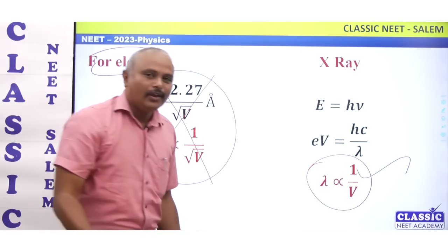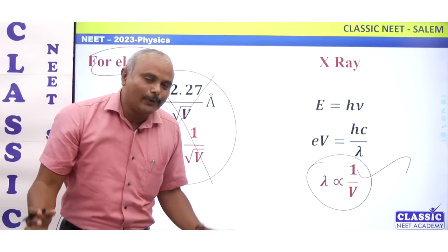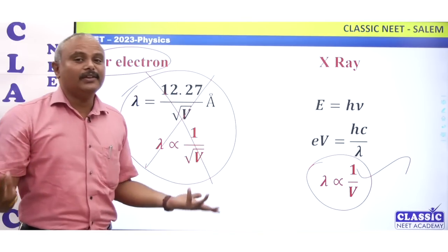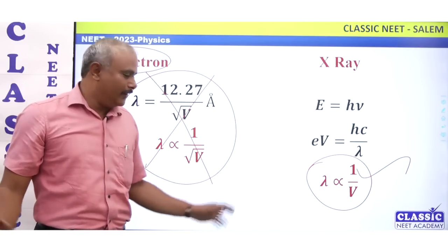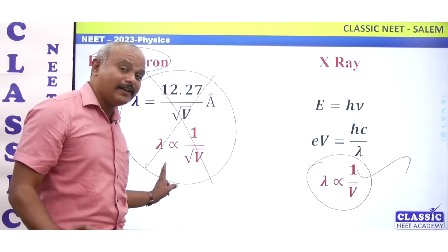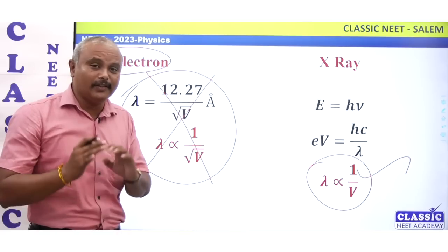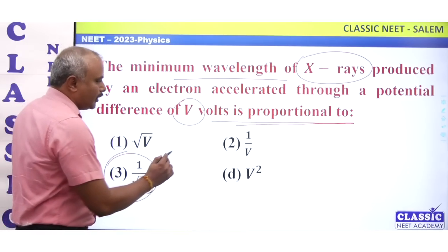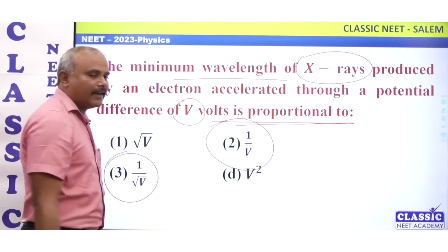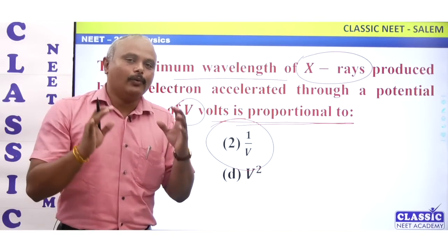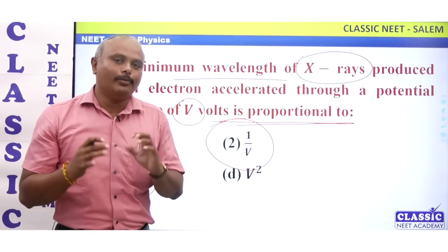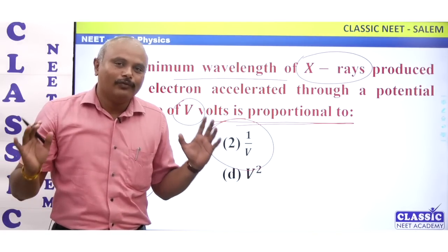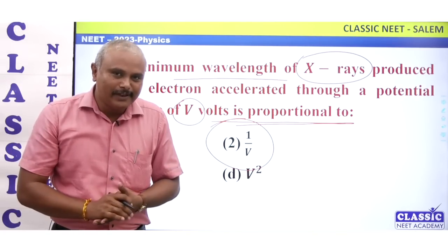This is a straightforward question with no grace mark — the answer is lambda inversely proportional to V, that is 1/V. Only the radius of gyration question gives a grace mark in physics. All the best. Thank you.